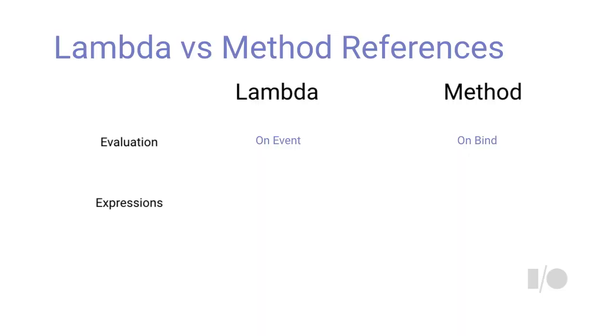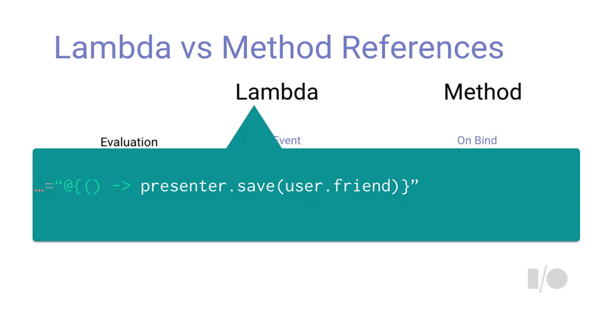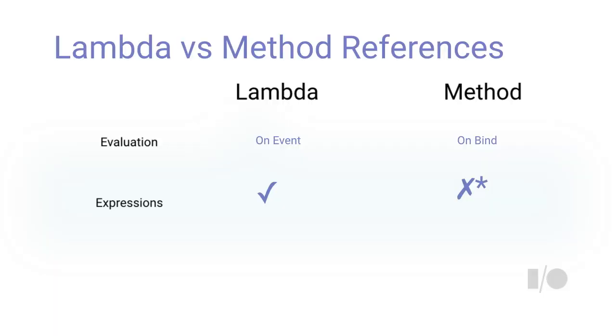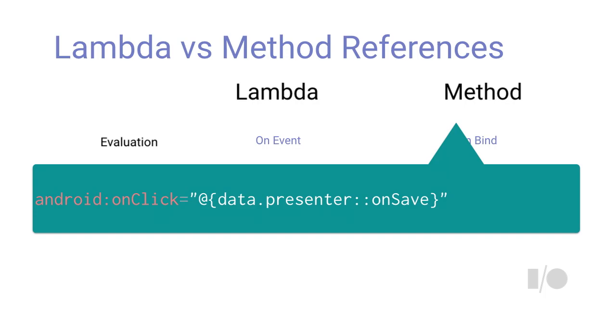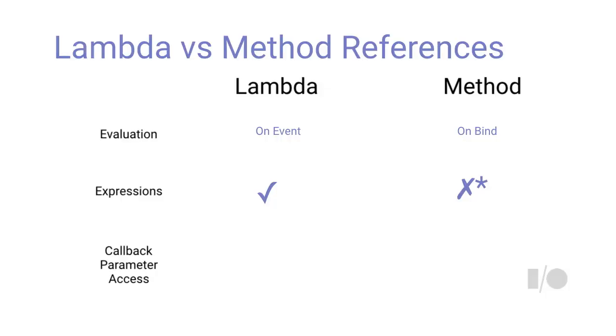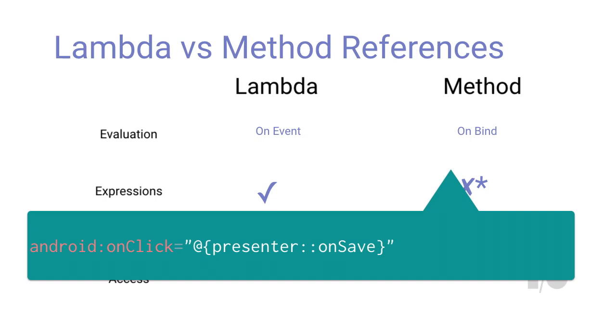Another difference: with lambda expressions you can use any expression inside the lambda — that's the big advantage. You can say presenter.save(user.friend) and we'll evaluate it. You can use anything valid in data binding. Versus method references, where you cannot change the call parameters. In method references, the method has to match the event signature, though you can still have an expression before the method name like data.presenter.save. With method references, if you want to access the callback parameters you declare them yourself.